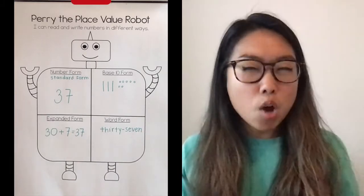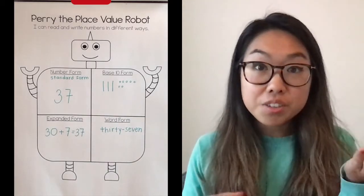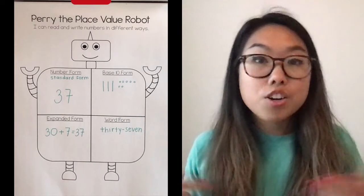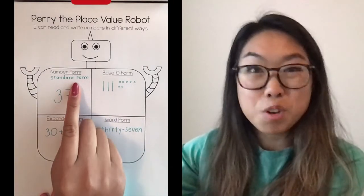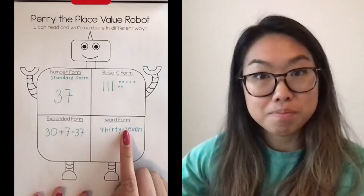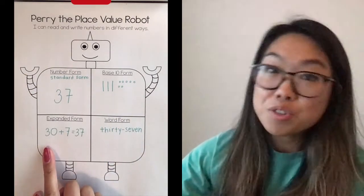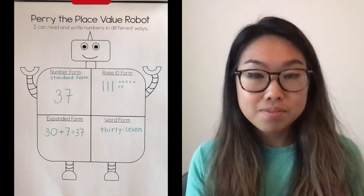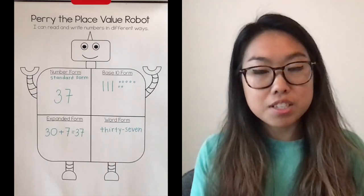Now I need you to think: how well do you understand the difference between value and digit? Remember, value is what's it worth, and digit is what's the number. Then think: are you able to identify and explain four different ways to write a number? We have number form or standard form, base 10 form, expanded form, and word form. We're practicing with two-digit numbers right now, but we're soon going to be practicing with three-digit numbers. Think about how well you understand what you learned today, and what is still challenging you or something you're still working on understanding.